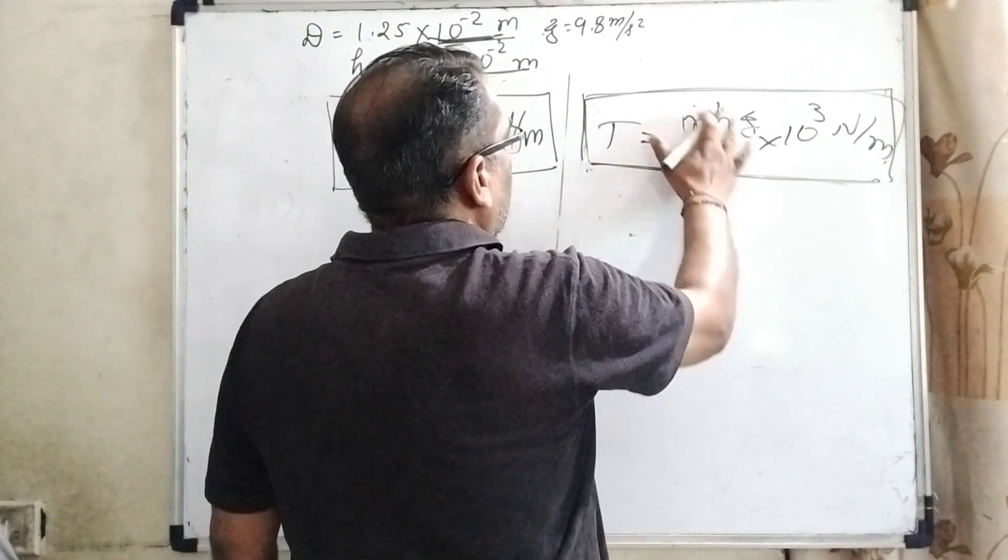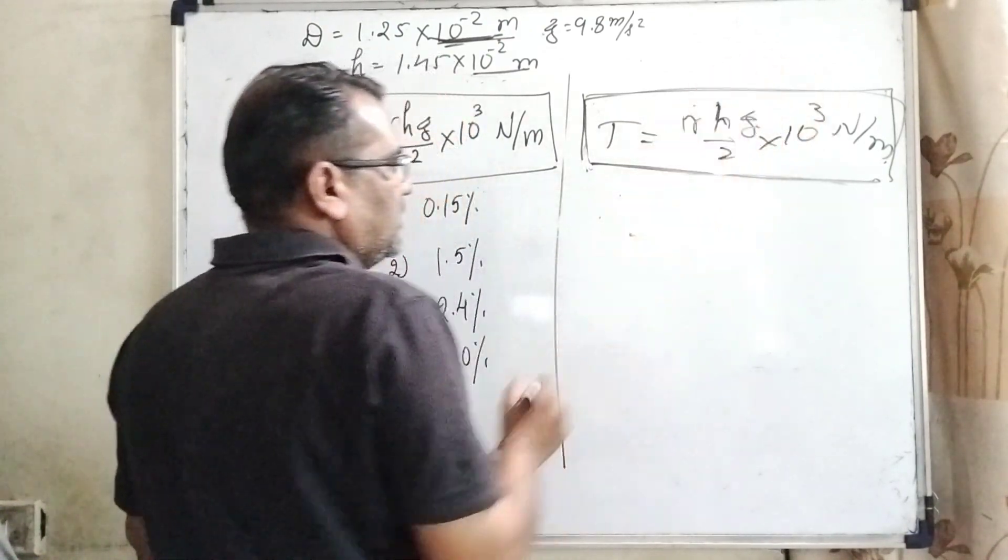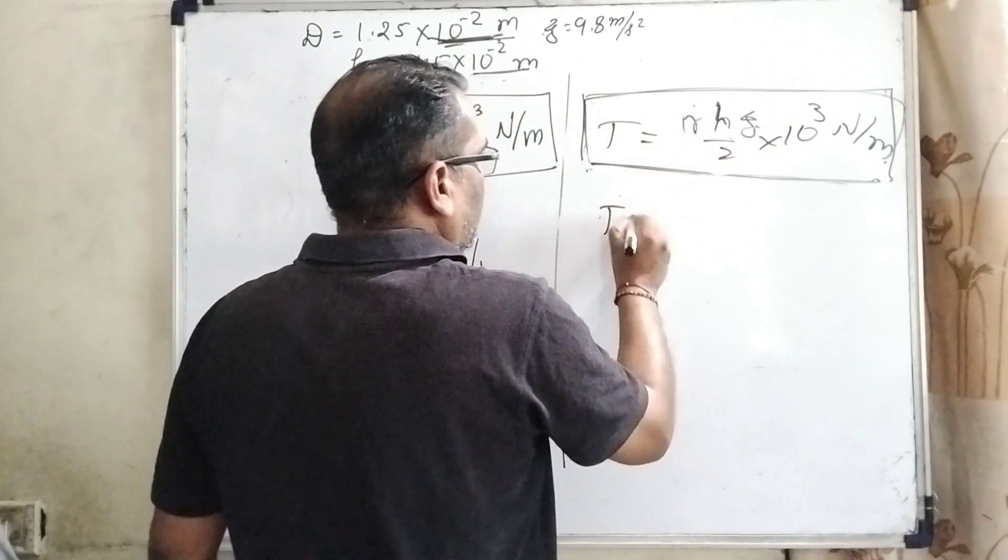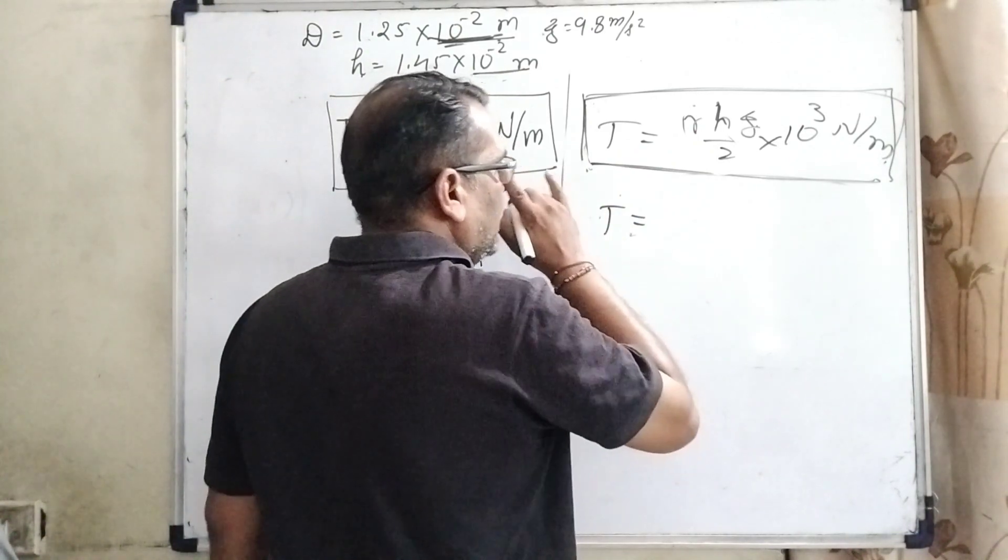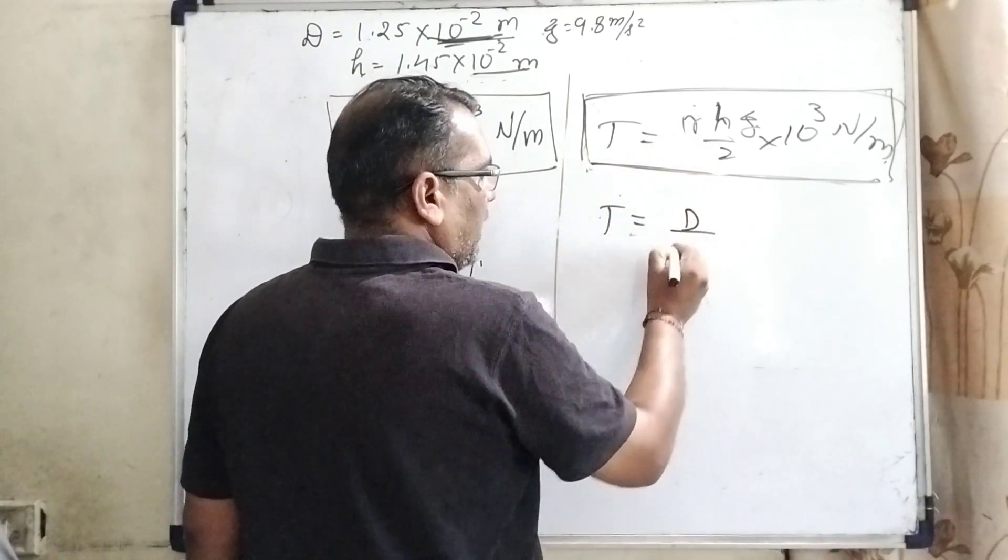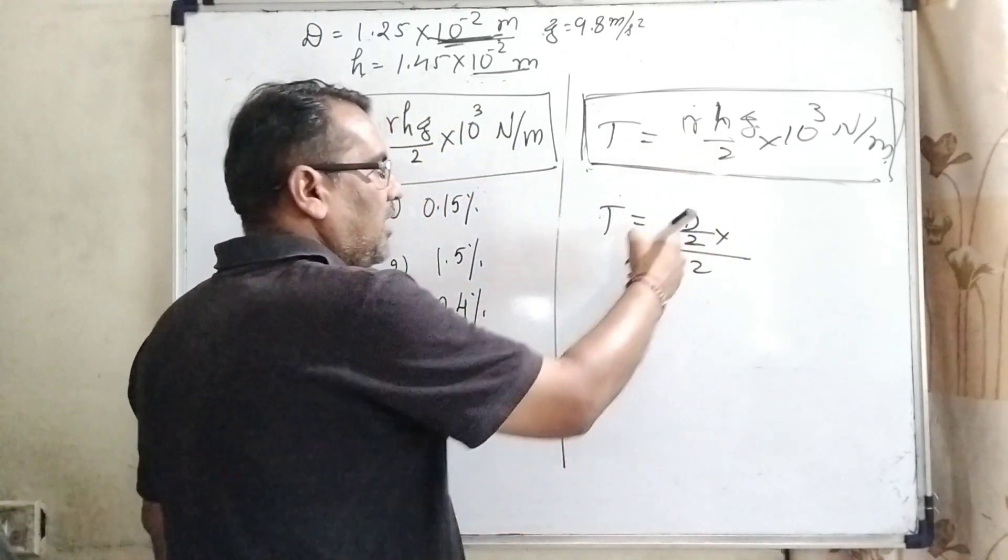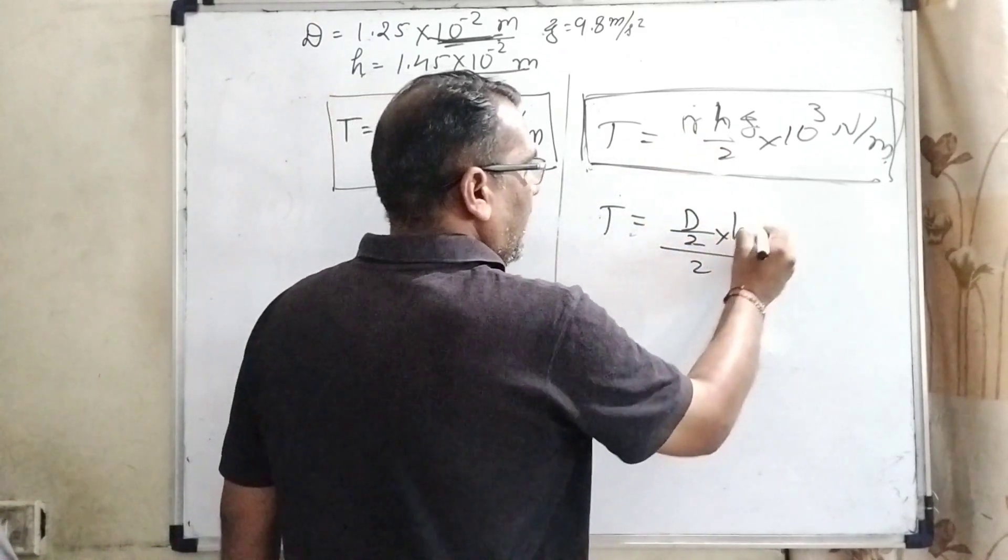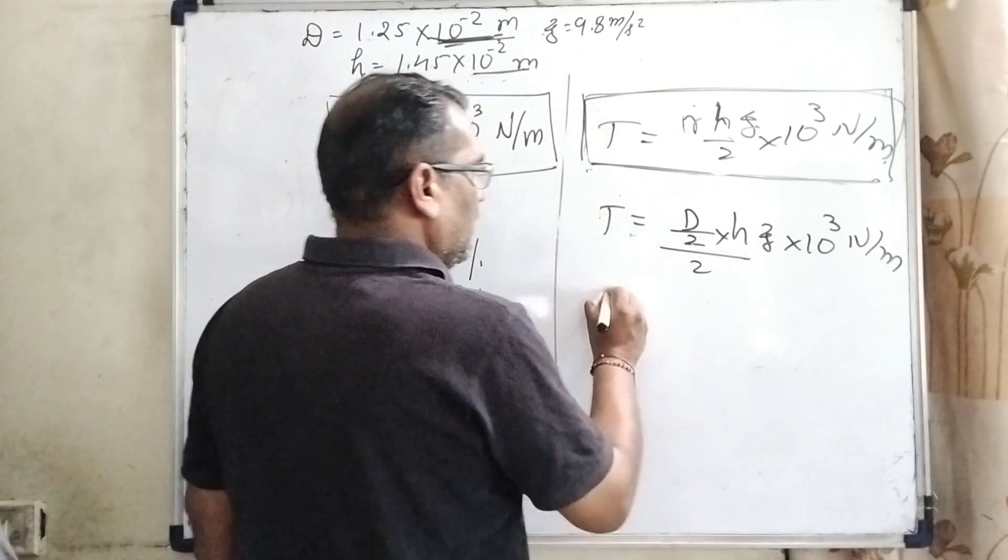Here, given the formula is RHg by 2 into 10 raised to power minus 3 Newton meter. Here D equal to, as you know that diameter is 2R and R is, it can be written as D by 2. So here, in the place of R, it can be written as D by 2 into Hg into 10 raised to power 3 Newton meter.